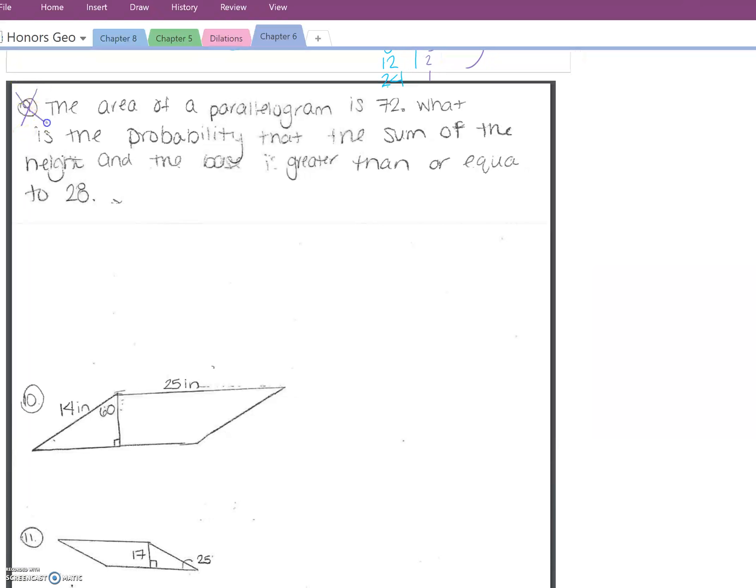Here's one of my favorite questions. The area of a parallelogram is 72. What is the probability that the sum of the height and the base is greater than or equal to 28? So we're going to do the same thing we just did. Let's list all the factors of 72 starting with 1.